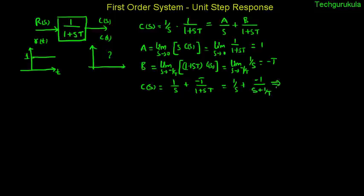If you take the inverse Laplace transform for this function, inverse Laplace of 1 by s is u of t, and inverse Laplace transform of the second term is minus e power minus t over capital T times u of t. Now c of t can be written as 1 minus e power minus t over capital T times u of t.